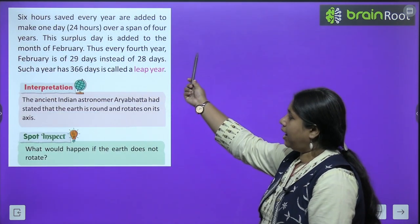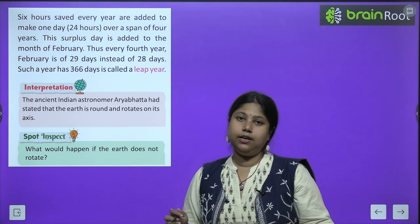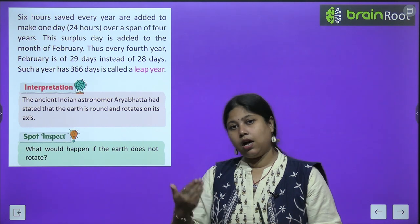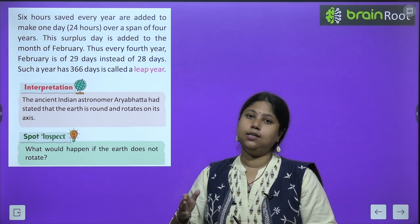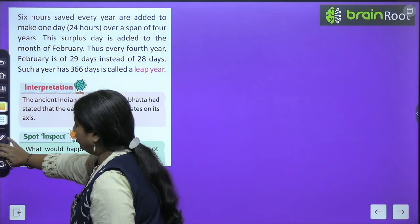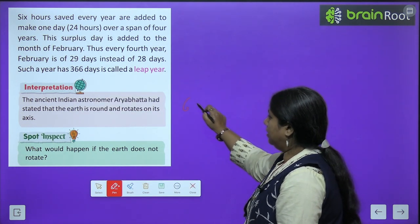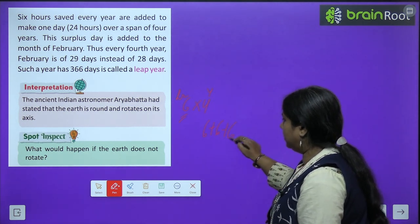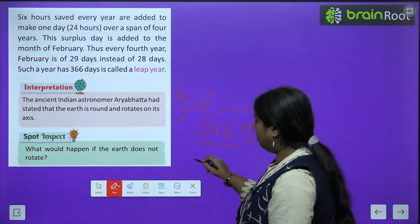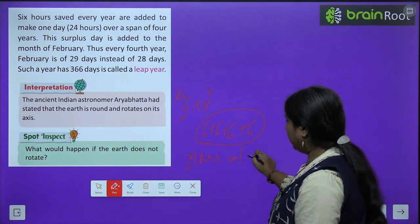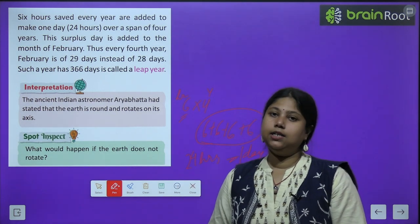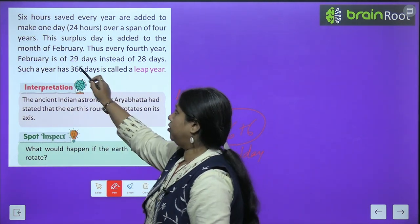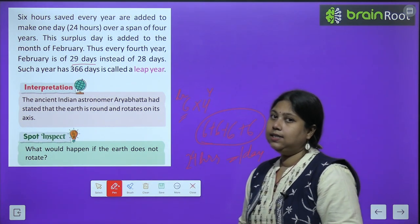6 hours saved every year are added to make one day, that is 24 hours, over a span of 4 years. Revolution mein 6 ghante aur lagte hain — 4 saal baad 6 into 4, yani 6 fours are 24. Har saal 6 plus 6 plus 6 plus 6, to 4 saal baad yeh 6 ghante milake finally hote hain 24 hours, aur yeh 24 hours milake banta hai 1 day. To yeh jo ek din badh jaata hai, yeh har 4 saal ke baad February ke maheene mein add ho jaata hai. February ka mahina usually jo 28 days ka hota hai, is particular year mein 29 days ka hota hai.